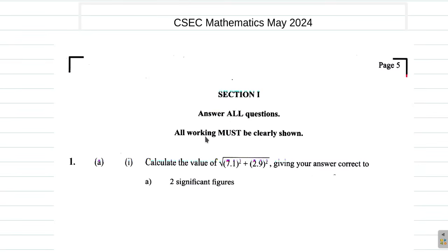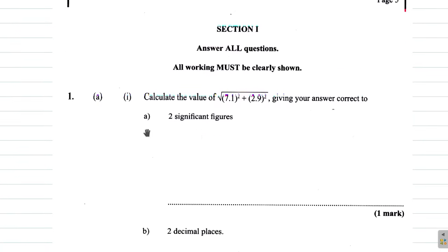Question 1A1A: calculate the value of the square root of 7.1 squared plus 2.9 squared, giving your answer correct to two significant figures. Now, you are allowed to use a calculator here — it's not paper one.